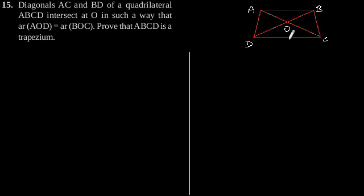Quadrilateral ABCD having diagonals AC and BD which intersect at point O. Now as given in the question, area of triangle AOD is equal to area of triangle BOC.